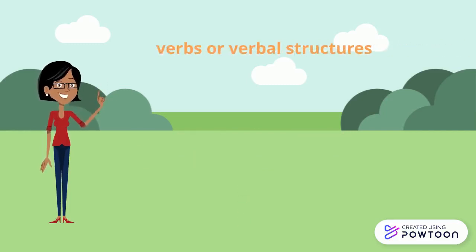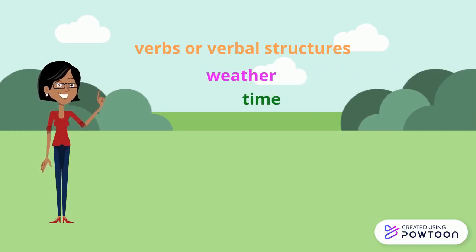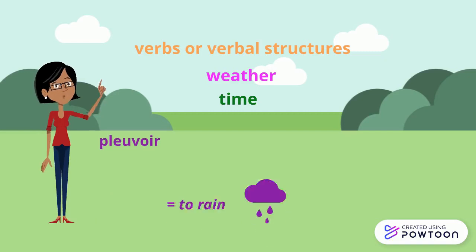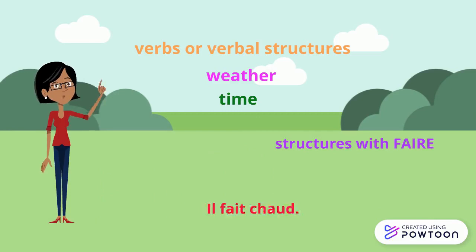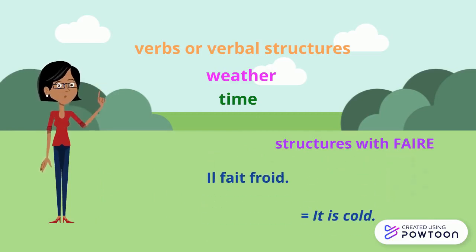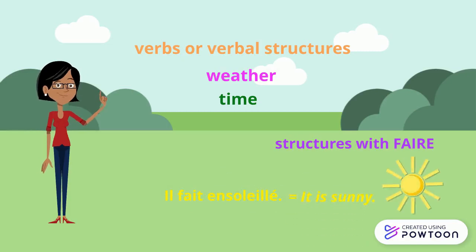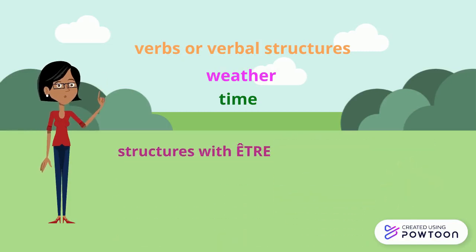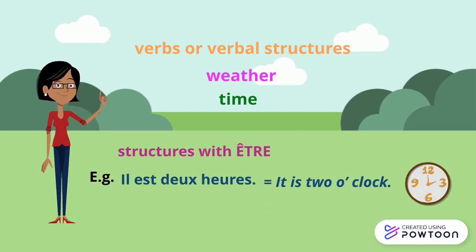Some verbs or verbal structures are indeed only conjugated at the third person singular with the pronoun il. It is the case of verbs or verbal structures that refer to weather and time. For instance, pleuvoir (to rain), neiger (to snow). Structures such as il fait chaud (it is hot), il fait froid (it is cold), il fait ensoleillé (it is sunny), or with être: il est deux heures (it is two o'clock).